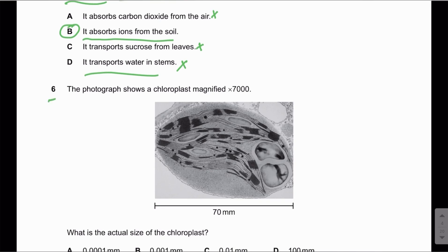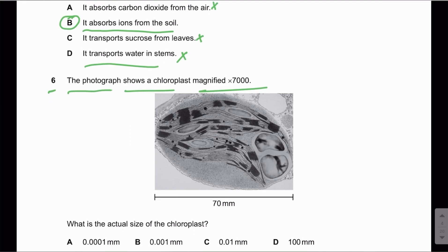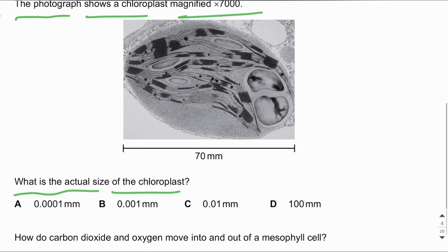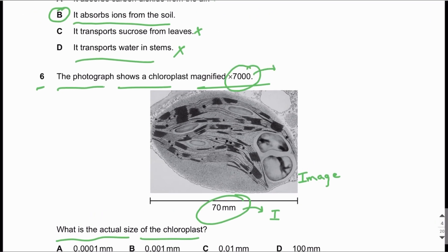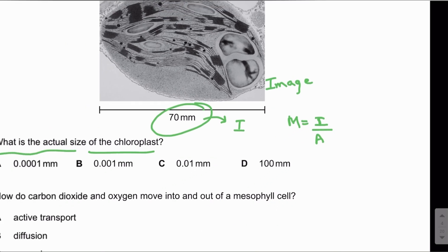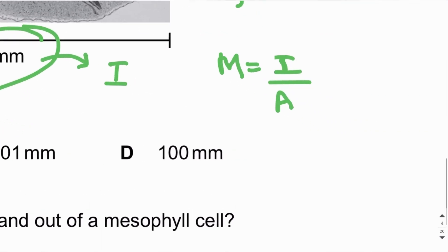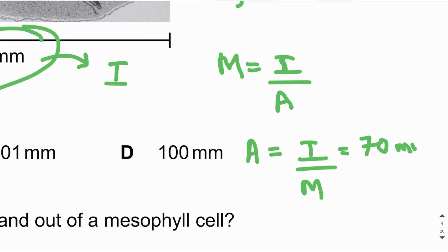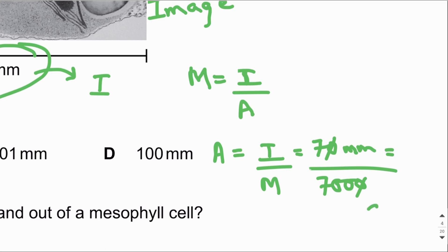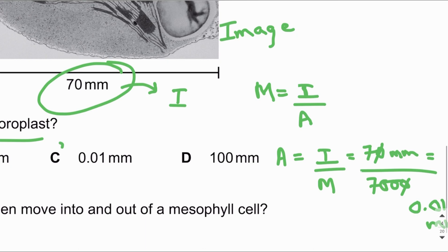MCQ number six: The photograph shows a chloroplast magnified seven thousand times — what is the actual size of the chloroplast? The image length (I) is 70 mm and magnification (M) is 7000. The formula is: magnification = image length ÷ actual length. Rearranging: actual length = image length ÷ magnification = 70 ÷ 7000 = 0.01 mm. The answer is C.